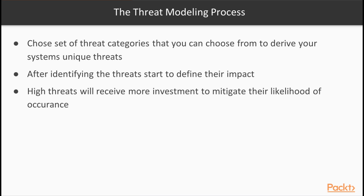At this stage, you're at the point where you can intelligently identify threats to your system. There are a set of threat categories that you can choose from to derive your system's unique threats, which makes it easier. Once you've identified the threats, you can start to define their impact and likelihood. The higher the impact and the higher the likelihood, the higher the threat is rated. Highly rated threats will ideally receive more investment to mitigate their likelihood of occurrence or their impact should they occur.